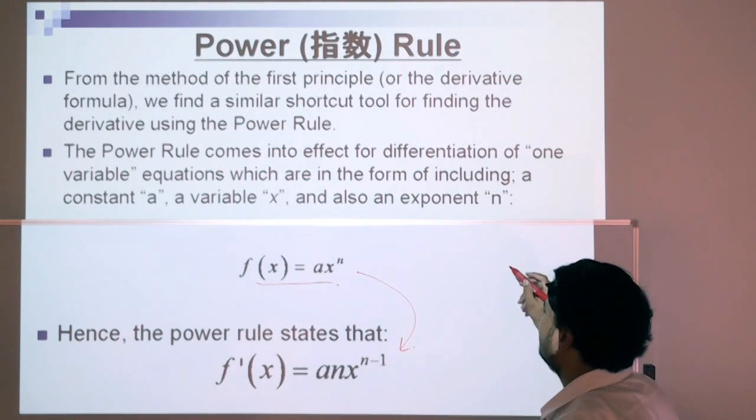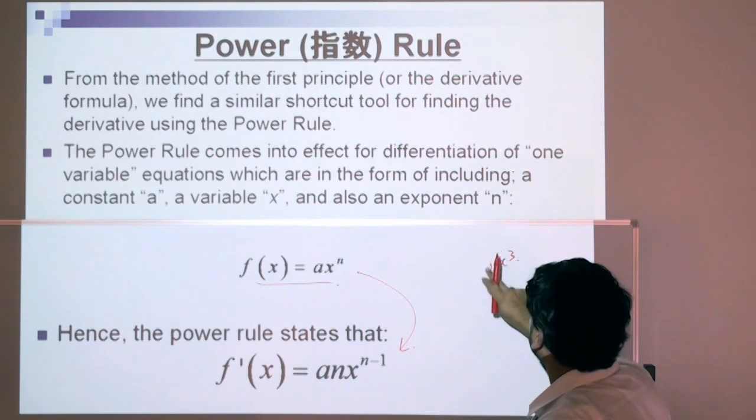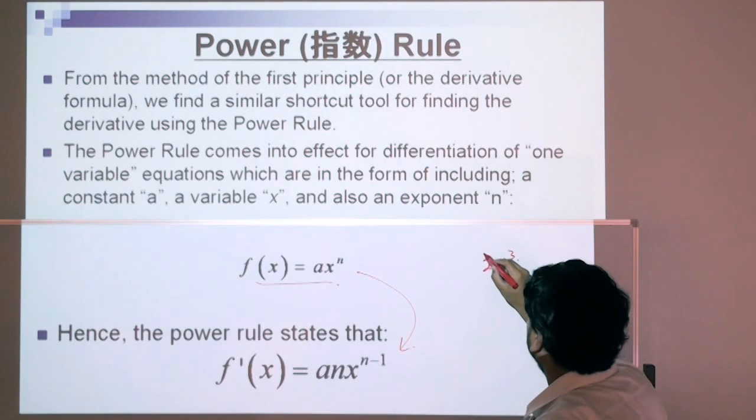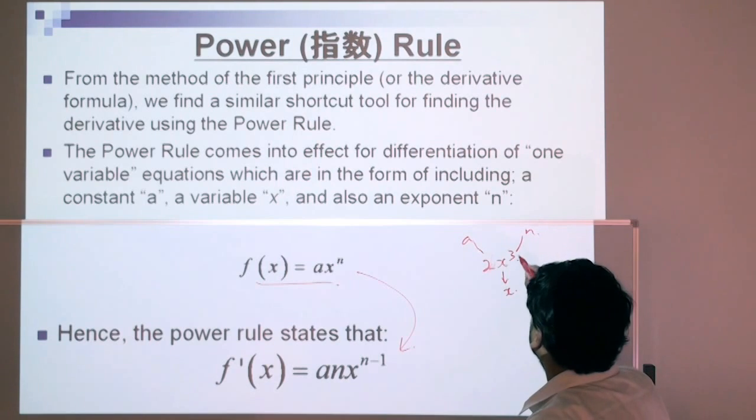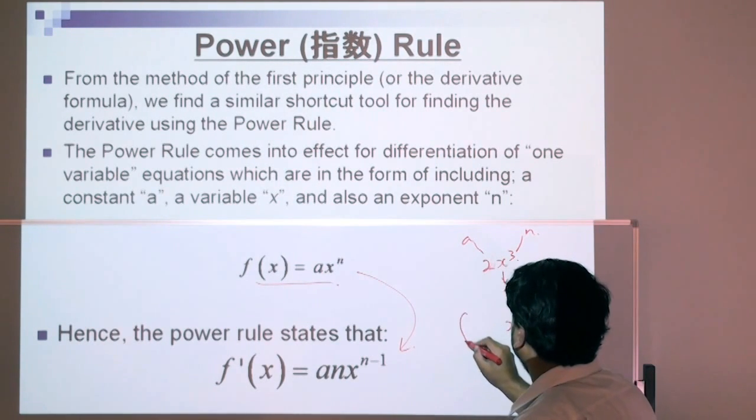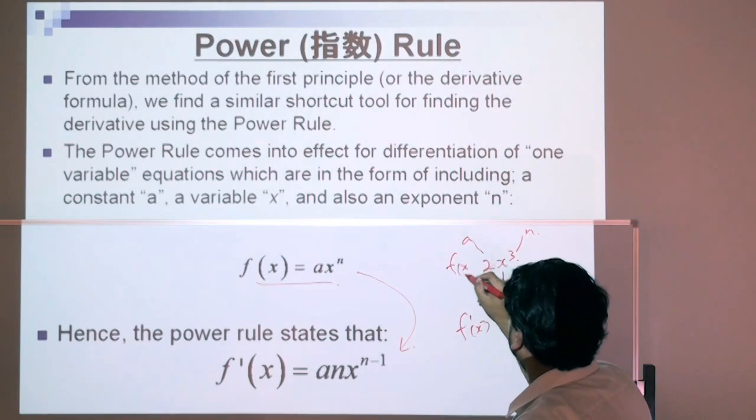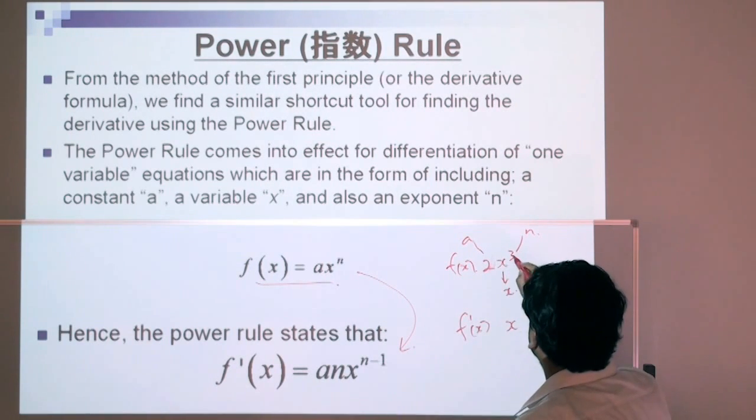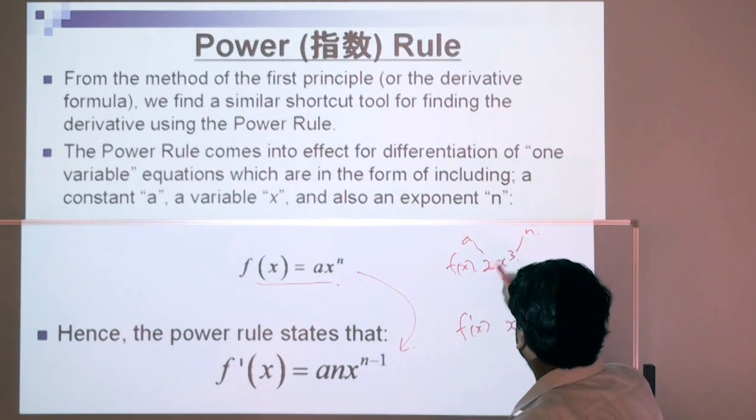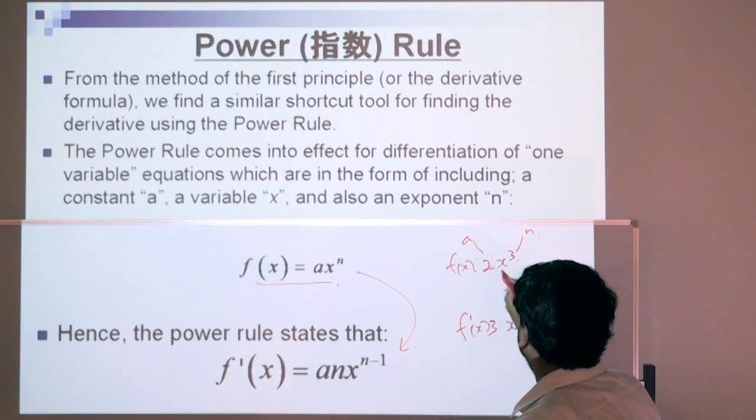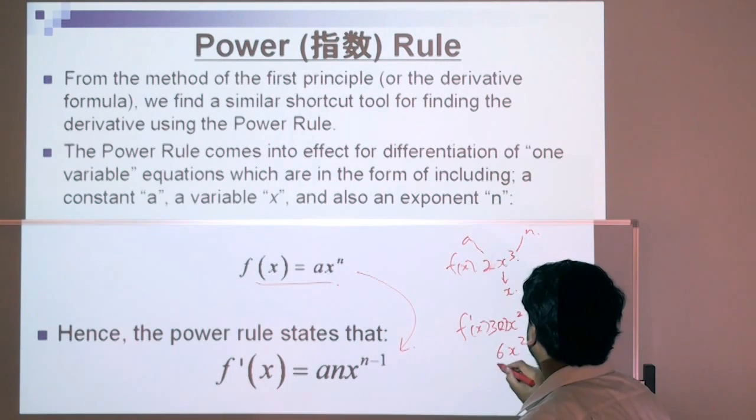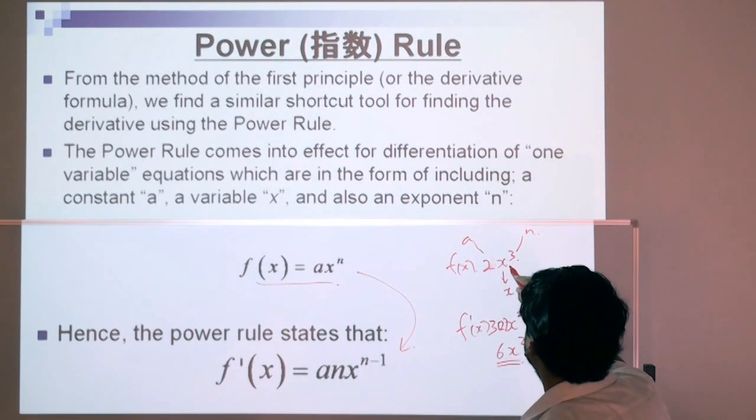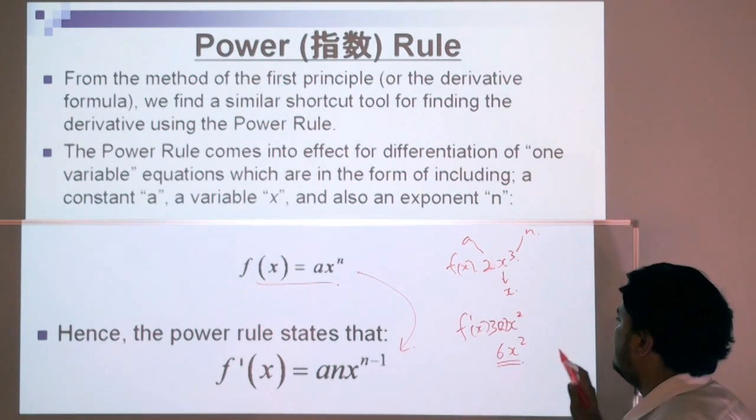A simple example would be 2x cubed. 2 will be your a, x is your x variable, and 3 is your n. n minus 1, that becomes f dash, 3 minus 1 is 2. We take n, put it over here, so 3 will come here, and we multiply it by the constant here, 2. 3 times 2 is 6, 6x squared. The derivative of 2x cubed is 6x squared.